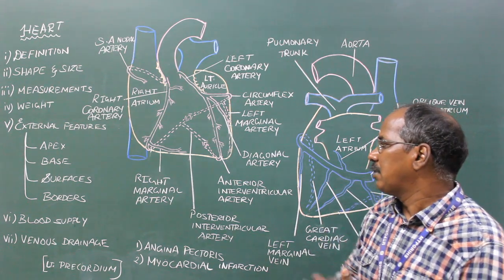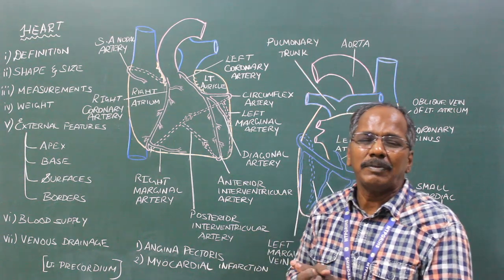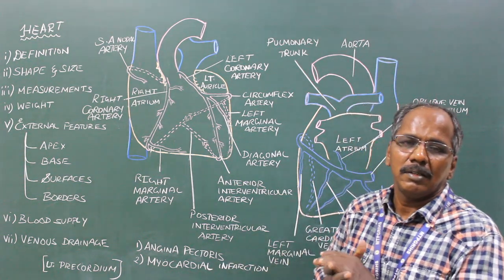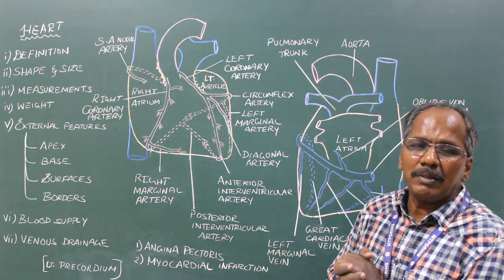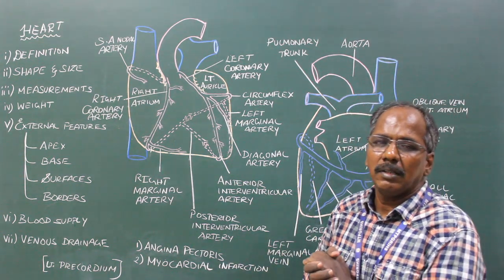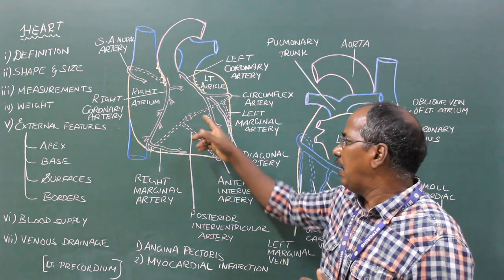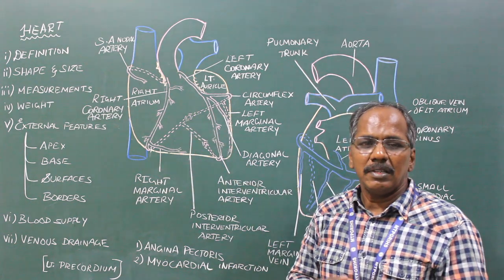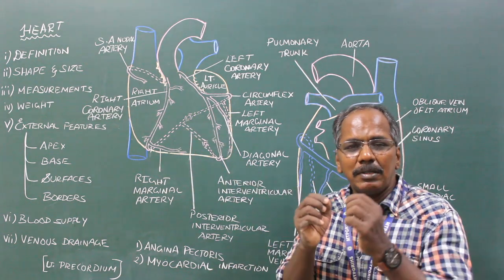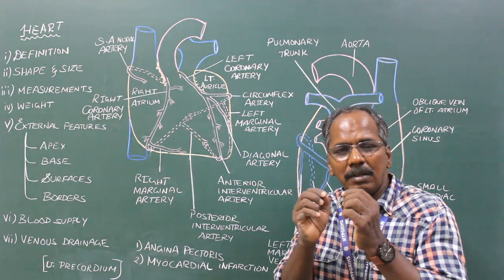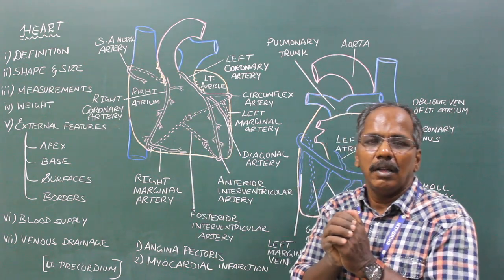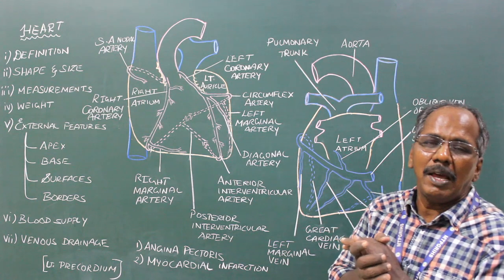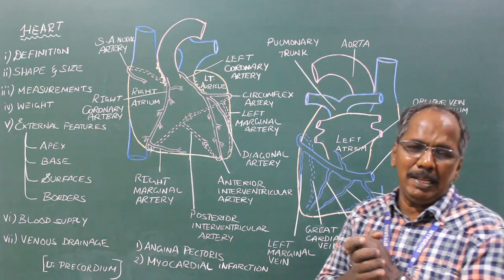All these arteries supply blood to the heart. Though there is anastomosis, since the anastomosing branches are very small, they are often known as end arteries.